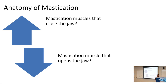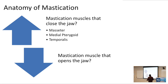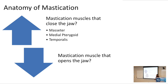Speaking of chewing, let's go through the anatomy of mastication. The mastication muscles that close the jaw are masseter, medial pterygoid, and temporalis. The mastication muscle that opens the jaw is the lateral pterygoid — so the lateral pterygoid is the muscle important in opening the jaw.